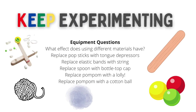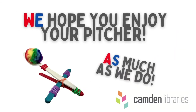Keep experimenting. Equipment questions: What effect does using different materials have? Replace pop sticks with tongue depressors. Replace elastic bands with strings. Replace spoon with a bottle top cap. Replace pom-pom with a lolly. Replace pom-pom with a cotton ball.